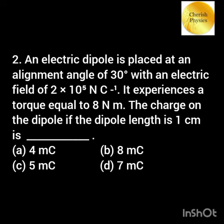An electric dipole placed at an angle of 30 degrees in an electric field of 2×10⁵ Newton per Coulomb experiences a torque of 8 Newton meter. The charge on the dipole of length 1 centimeter is?